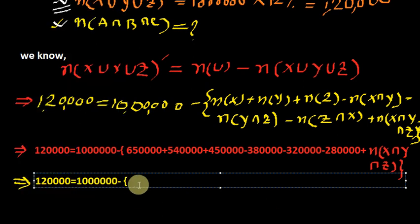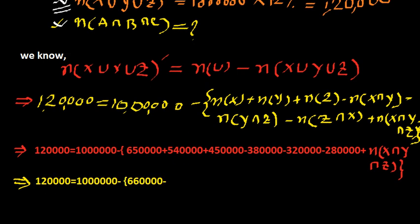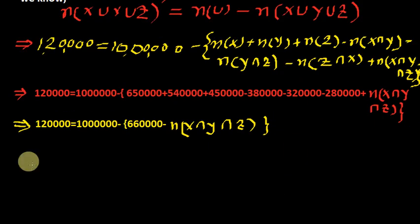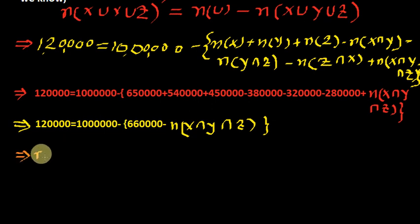Minus. So the value we need to place here: number of X∩Y∩Z, bringing the bracket to close. Number of X∩Y∩Z equal to...